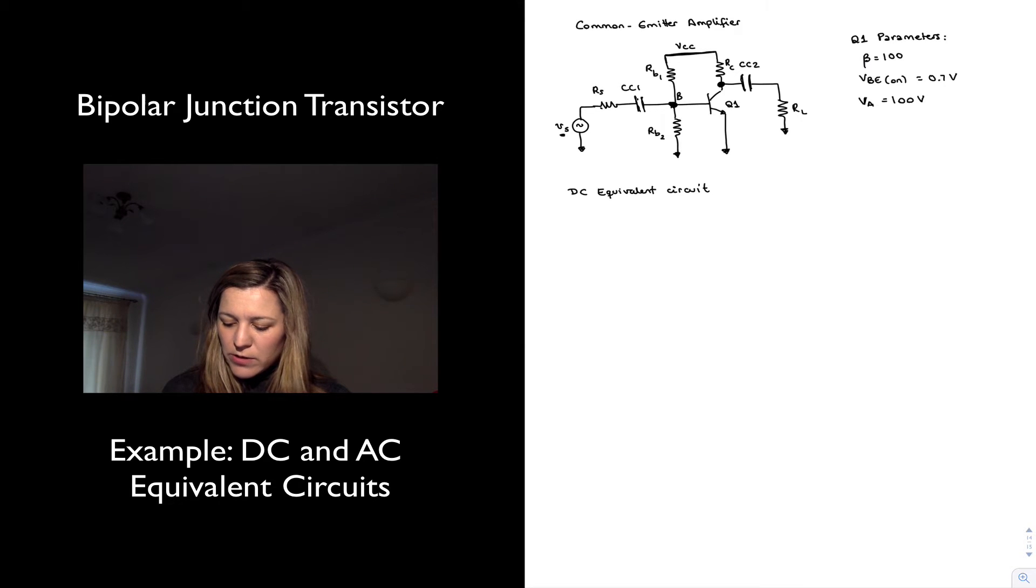The DC equivalent circuit, we have a DC source VCC, resistors behave the same for DC or AC signals. And then we are to substitute the transistor with its model, so that means that we're going to model the base emitter junction as a diode, and from collector to emitter we're going to have a current source.